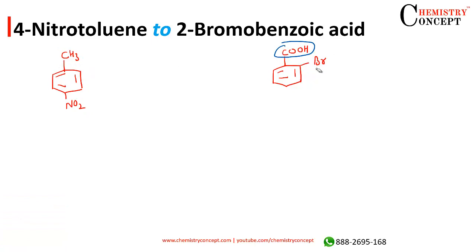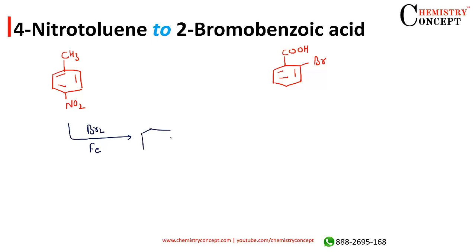This can be done systematically using different reactions. The first reaction is the introduction of bromine by reacting this compound with Br2 in the presence of iron, in the dark. Methyl is an ortho-para directing group and NO2 is a meta directing group, so the Br will go to this position — ortho to methyl and meta to nitro — a perfect location for attachment of bromine.